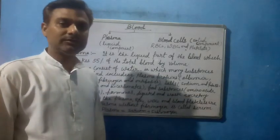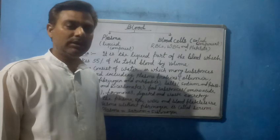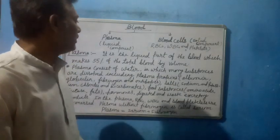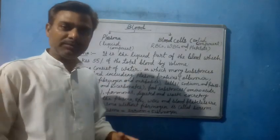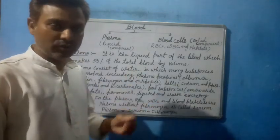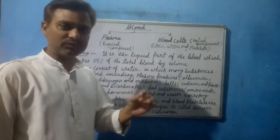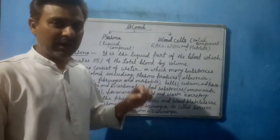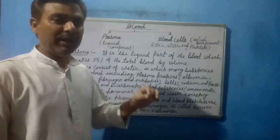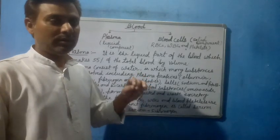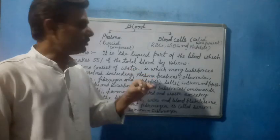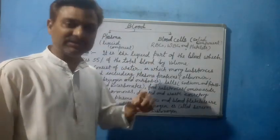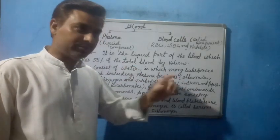Hello, good morning students. Today I am going to teach you the next part of the circulatory system. The transportation of various substances throughout the body takes place with the help of a circulatory fluid called blood. Blood is the main part of the circulatory system which carries the various substances inside the body of human beings.